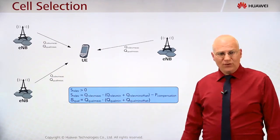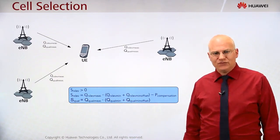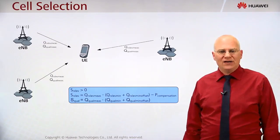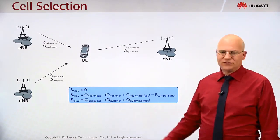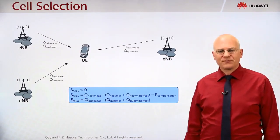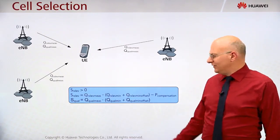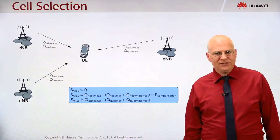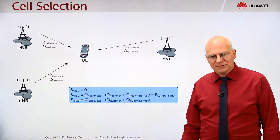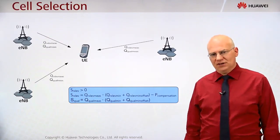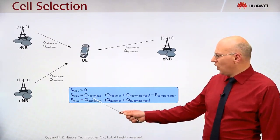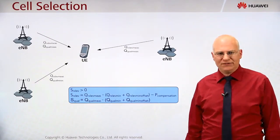There is also a reselection or cell selection rule regarding the quality of the level, based on the RSRQ value. This was introduced in the 3GPP release 9 version. We know that this is dependent on the traffic in the cell, so it decreases with increasing resource block usage. This makes it more probable that a low loaded cell will be selected.